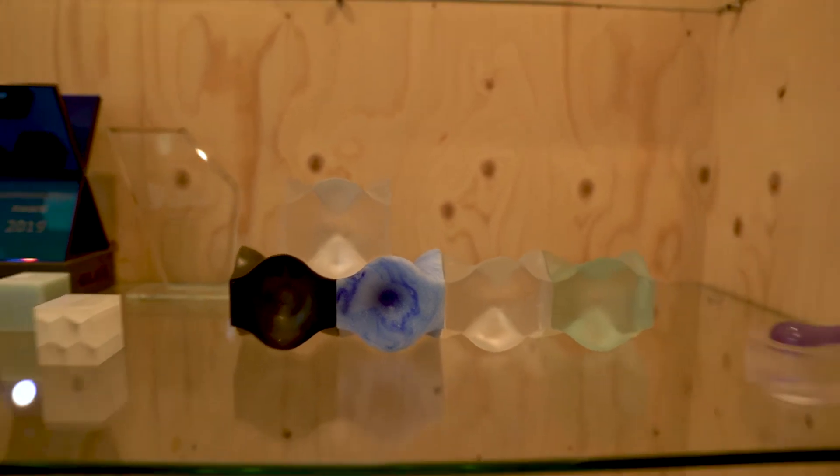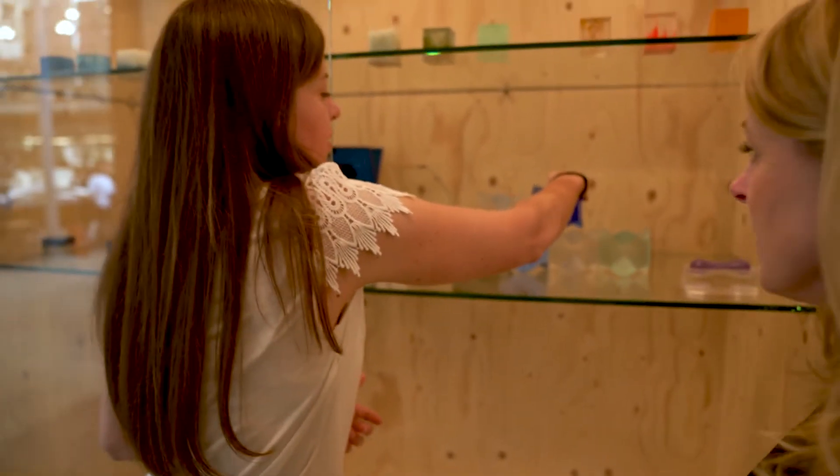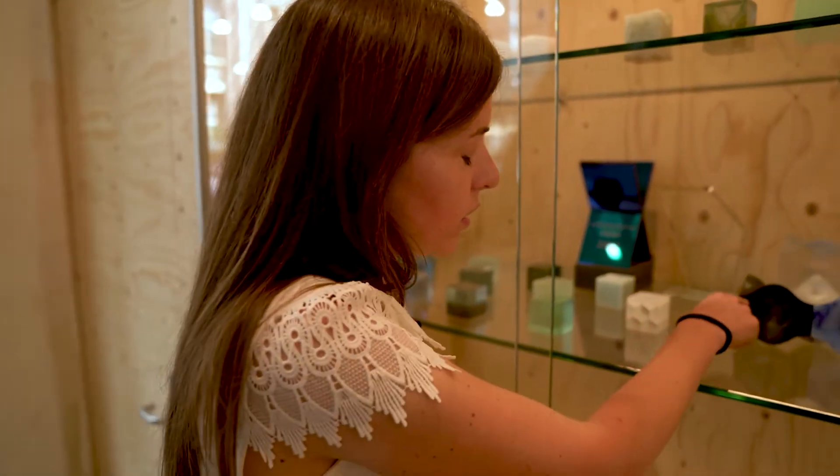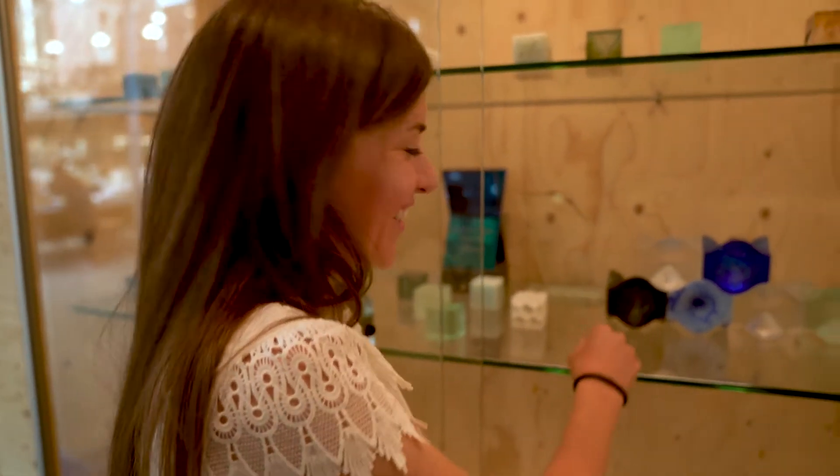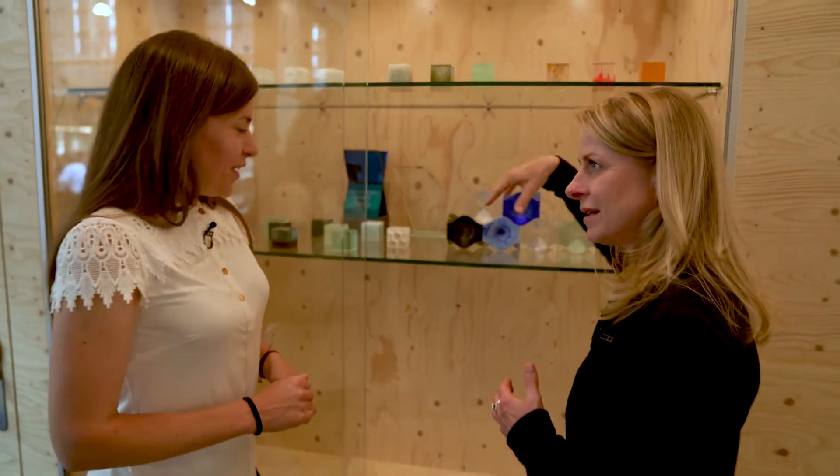But most importantly, we started experimenting with different types of waste glass. So what you see here, all these colors are different types of glass that we are recycling back to glass via casting. So these types of glass are currently not recycled. For example, this is old television screens. Nice. Yes. Can you actually use that as a structural glass now? Yes, you can.